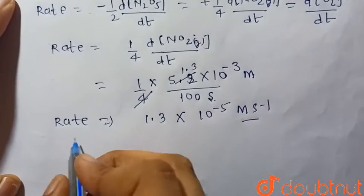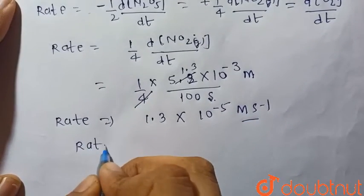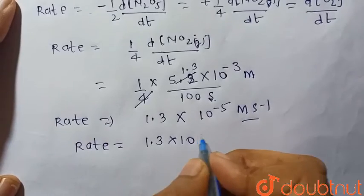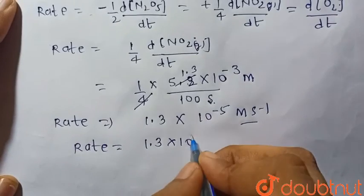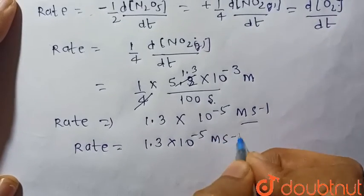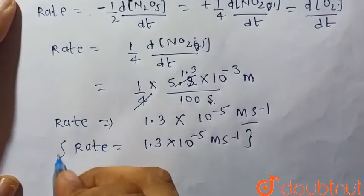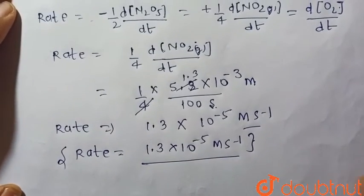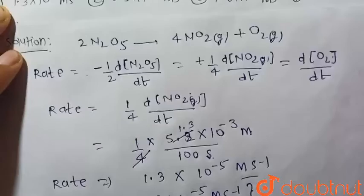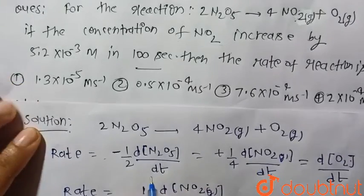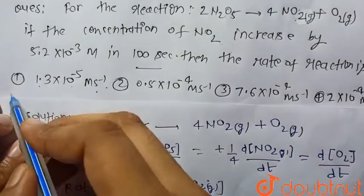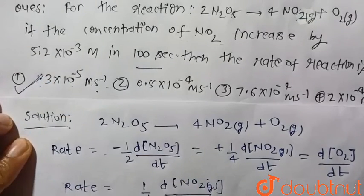The rate of this reaction will be 1.3×10^-5 molar per second, or mole per liter per second. Now consider the given options. It is given in option number 1: 1.3×10^-5 molar per second. Hence option 1 is the correct choice.